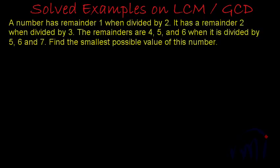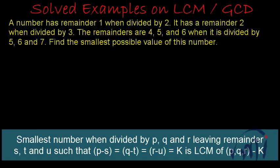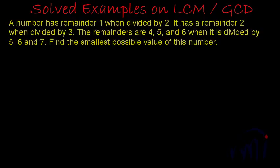When we were discussing the properties or additional results based on LCM and GCD, we discussed that if the difference between the divisor and remainder is constant — like when we divide by 2 we get remainder 1, the difference is 1, and when we divide by 3 we get remainder 2, again the difference is 1 — then the number we are trying to find will be the LCM of all the divisors minus that constant difference. If you have any confusion, you can watch that video in the link given below.